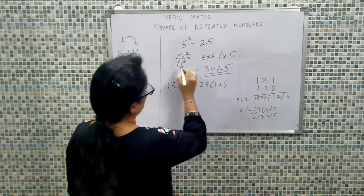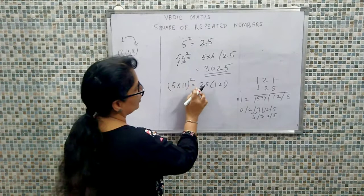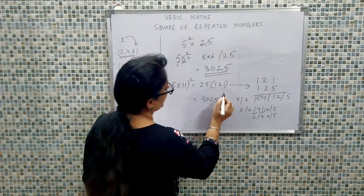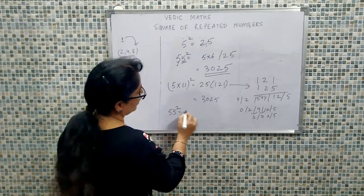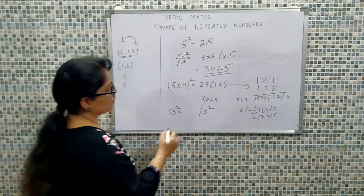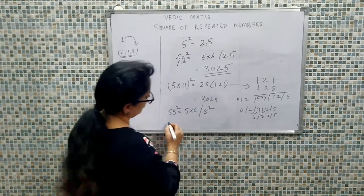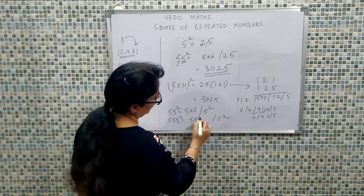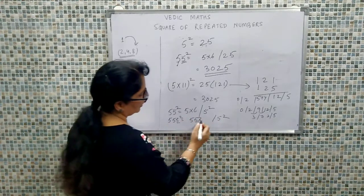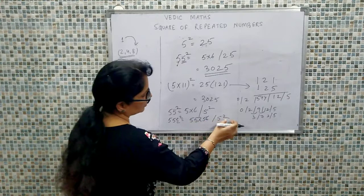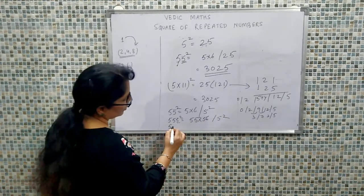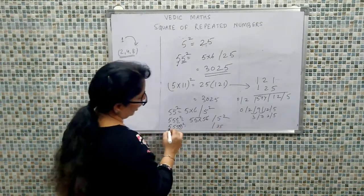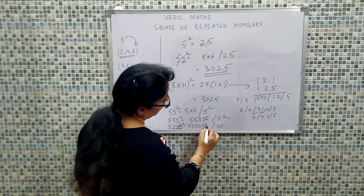So agar hume 55 ka square nikaalna hai — ek taraf 5 ka square likhte hain, aage 5 into 6. Next agar triple 5 ka square nikaalna hai — yahan 5 ka square likhenge, aur aage 55 into 56 multiply kar dijiye. Next, 5555 ka square: 5 ka square is 25, aur aage 555 into 556. This is the way the square of repeated 5s is calculated.